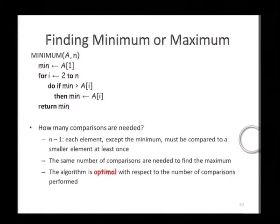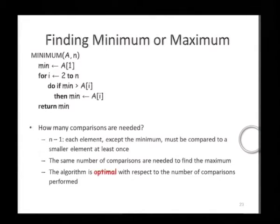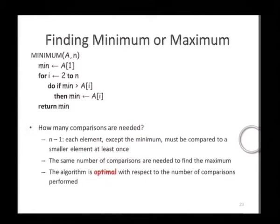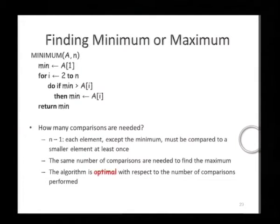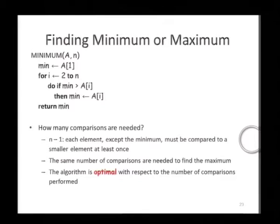Compare the current minimum to the new data entered into the sub-problem. In the second iteration, we consider the second element and compare it with the minimum, which was the first element. If the second element is smaller than the current minimum, then it becomes the minimum among the array, which consists of the elements a[1] and a[2].